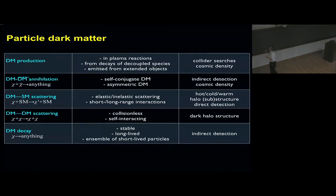Here's a table to give you an idea of how many things enter the determination of a good candidate for dark matter. There is thermal production, annihilation, scattering, or decay. Dark matter could be produced in plasma reactions from the case of decoupled species emitted from extended objects. The production can be tested in collider searches or using the cosmic density in the universe.